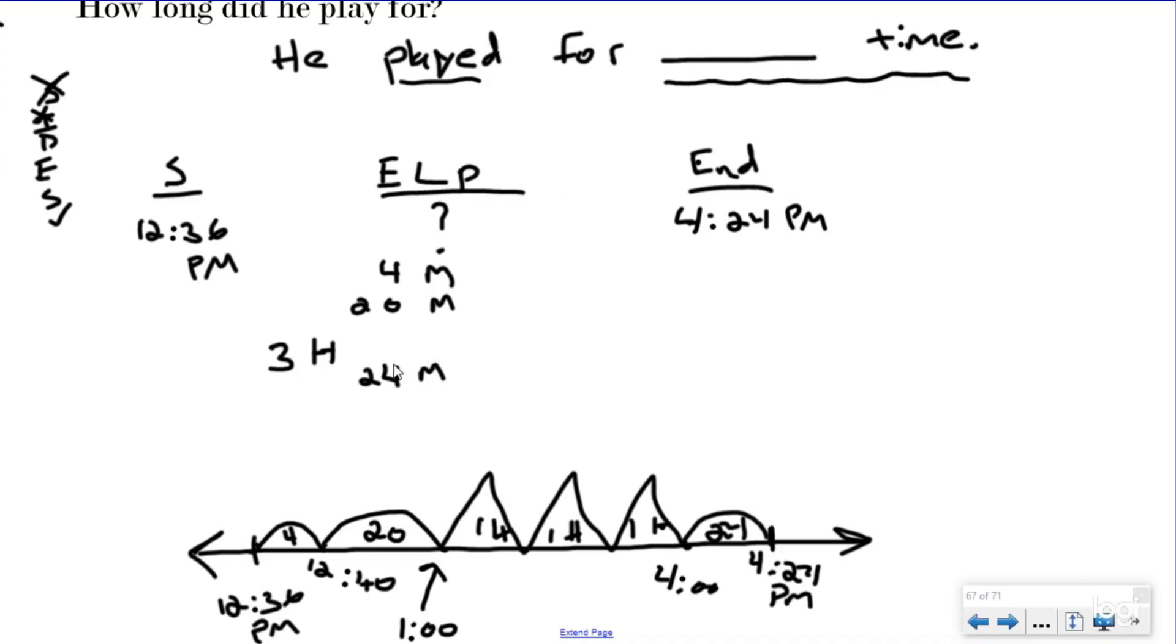So my next step is I simply just need to add up all the elapsed time I added to my timeline. When I do that, I have three hours. And that's going to be 48 minutes. So he got pretty lucky on a Saturday and he got to play for three hours and 48 minutes. And I'm going to erase the word time because otherwise my sentence no longer makes sense. So that's how you do the elapsed time.